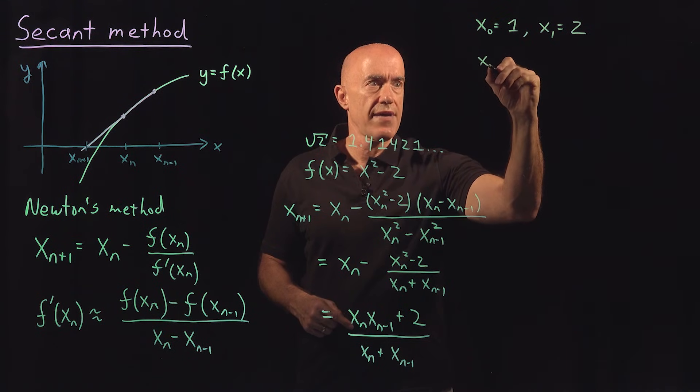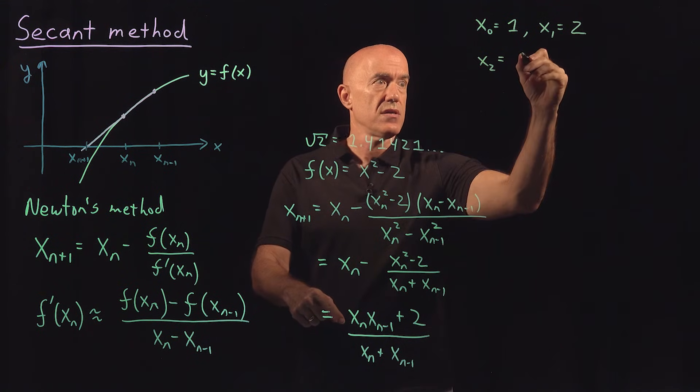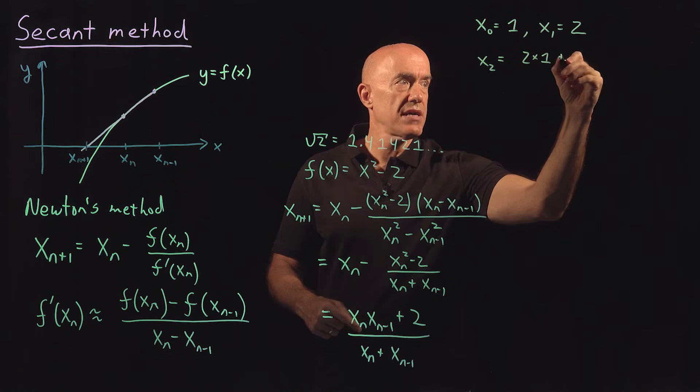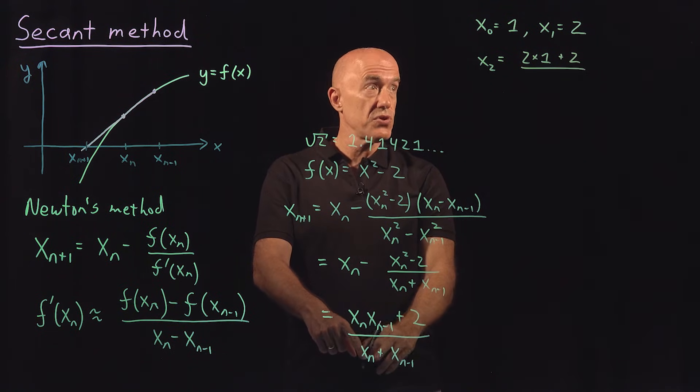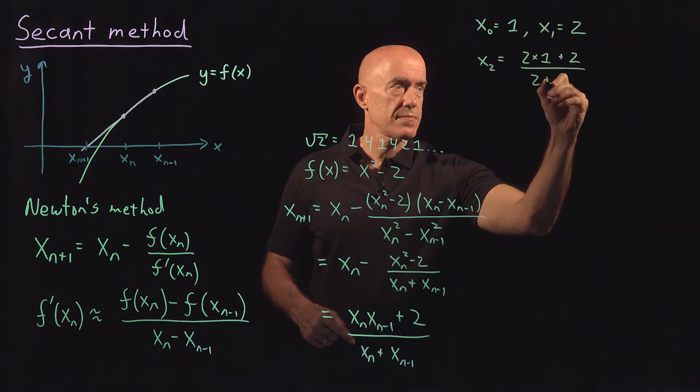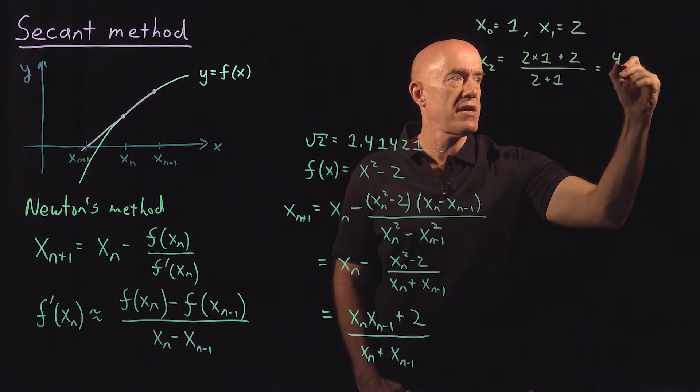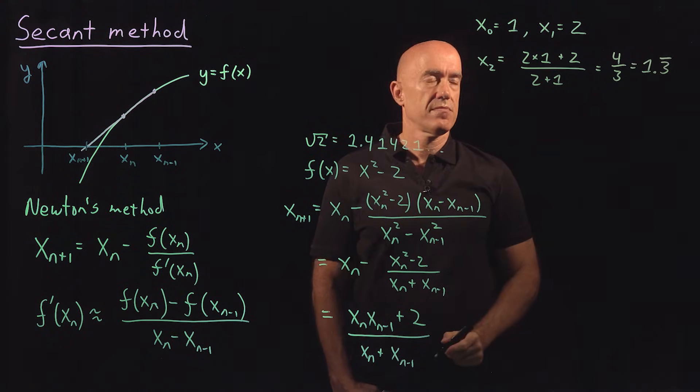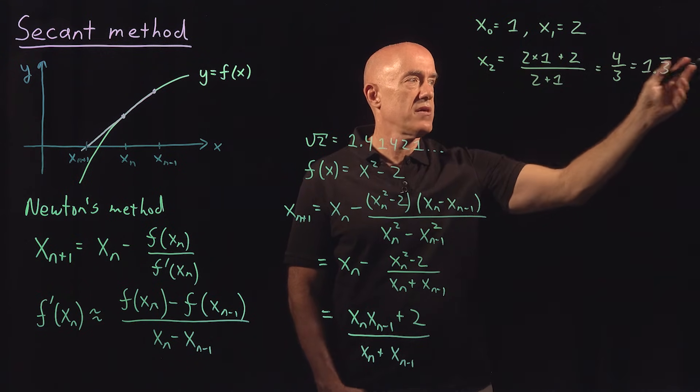Then secant method gives us x_2. So that would be x_1 times x_0, so 2 times 1, plus 2 divided by 2 plus 1. So this is 4 divided by 3, which is 1.3 repeated. We go from 1 to 2 to 4 thirds.